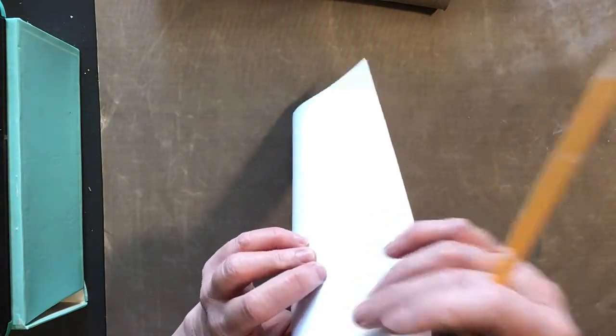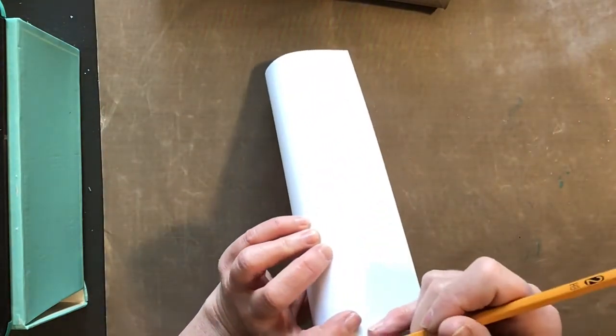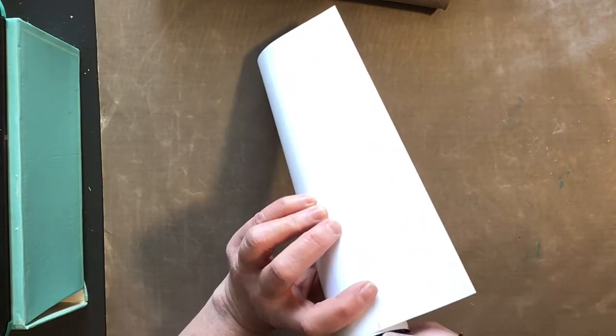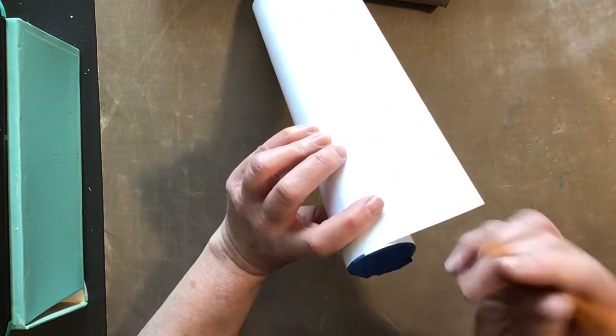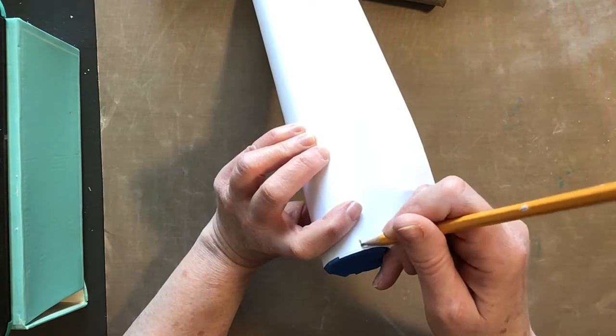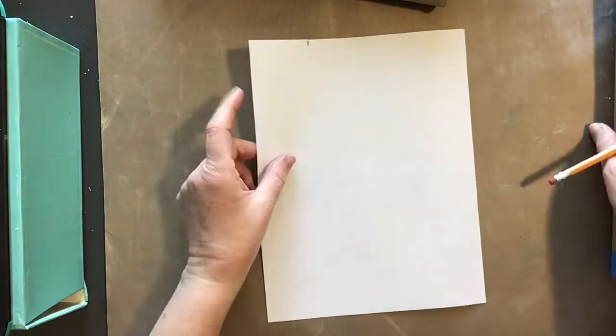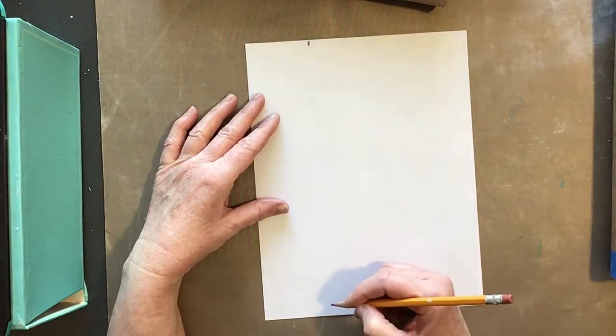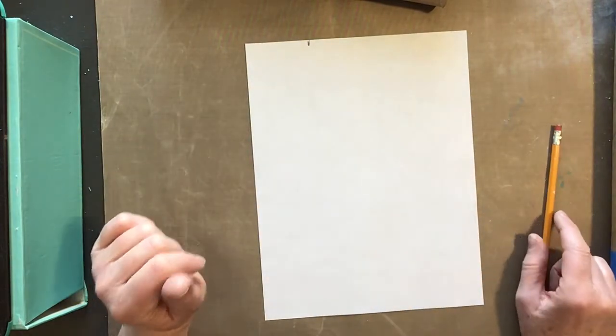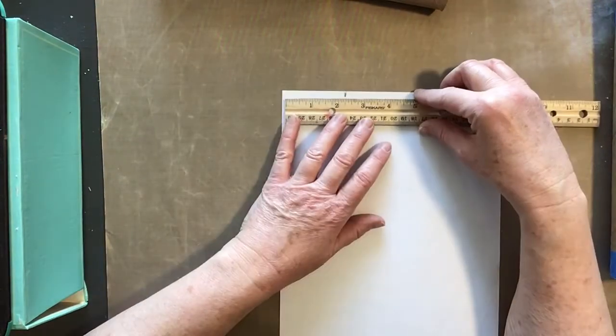I'm going to make sure it overlaps a little bit and then I'll make a mark, maybe about just a half inch right there. I want to cut this nice and straight. So I'm going to take a ruler and measure that, about two and a half inches.